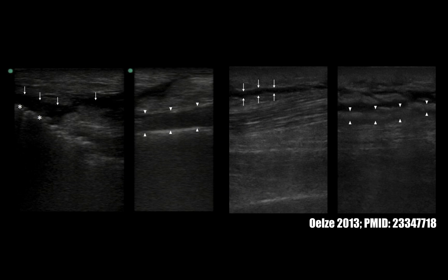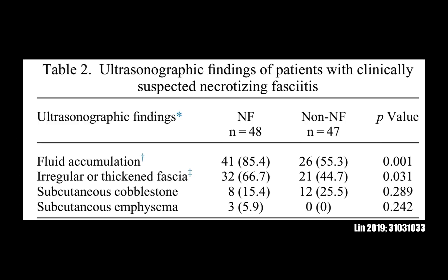It's easy to focus on the gas, but that's actually a later finding. Make sure to also keep an eye on the presence of a fluid layer in the deep tissues, highlighted here by all the arrows. This fluid thickness stripe is arguably the most important thing to consider when determining if you're looking at regular cellulitis or an NSTI. A retrospective review of 95 patients — 48 with necrotizing fasciitis and 47 with regular cellulitis — found that this fluid accumulation had the best predictive value for differentiating the two.